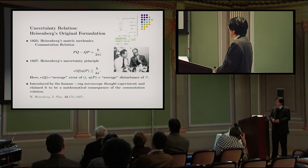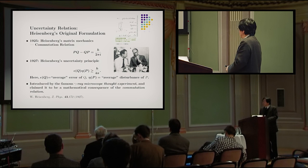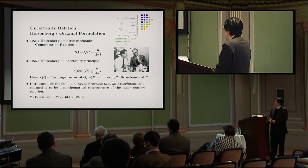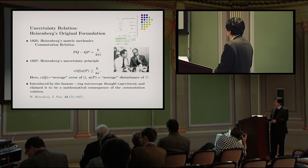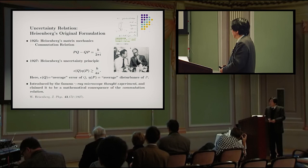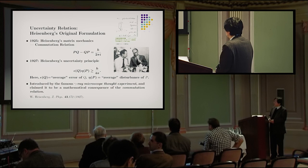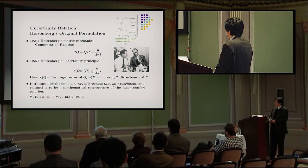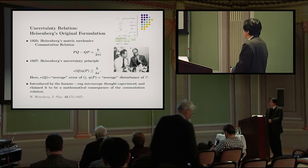In 1927, Heisenberg found his uncertainty principle — or uncertainty relation, as he called it — which is in the form ηQ times ηP, larger than H over 4π. Here, ηQ is the mean error or average error of position Q, and ηP is the average disturbance of P. He introduced this relation by the famous gamma ray microscope thought experiment and claimed it to be a mathematical consequence of the commutation relation.